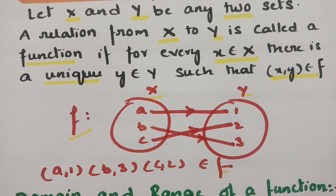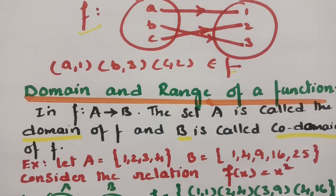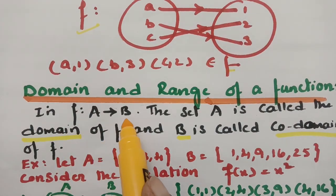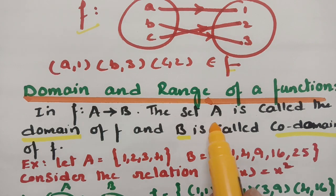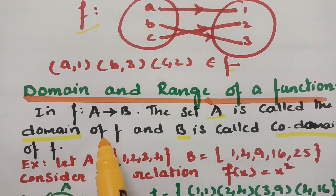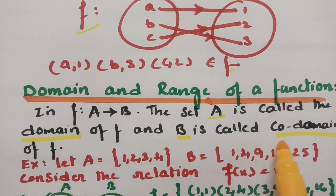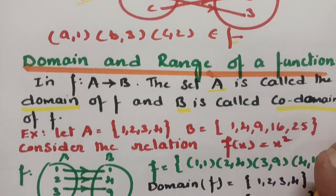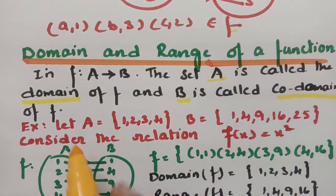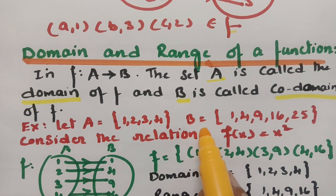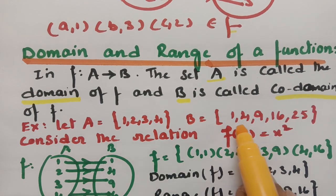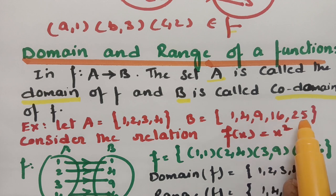Now, what is the domain and the range of a function? If f maps from set a to set b, then set a is called the domain of f and set b is called the co-domain or the range of f. For example, set a is given as {1, 2, 3, 4} and set b is given as {1, 4, 9, 16, 25}.